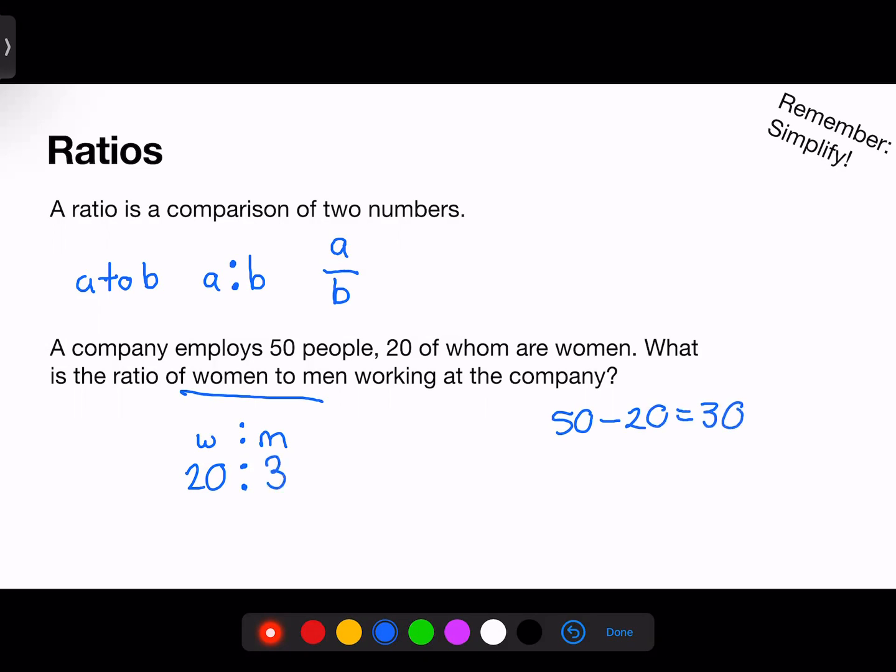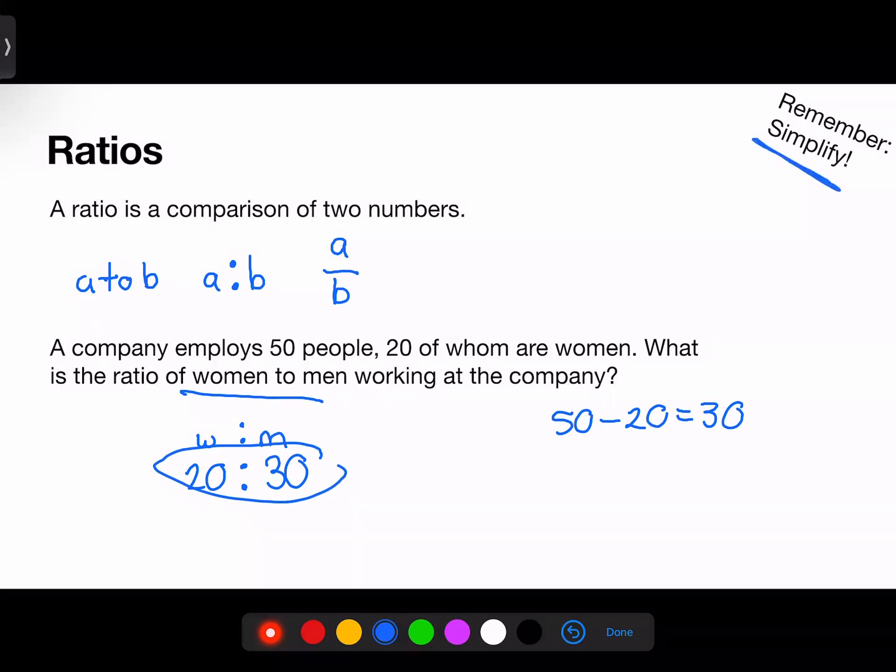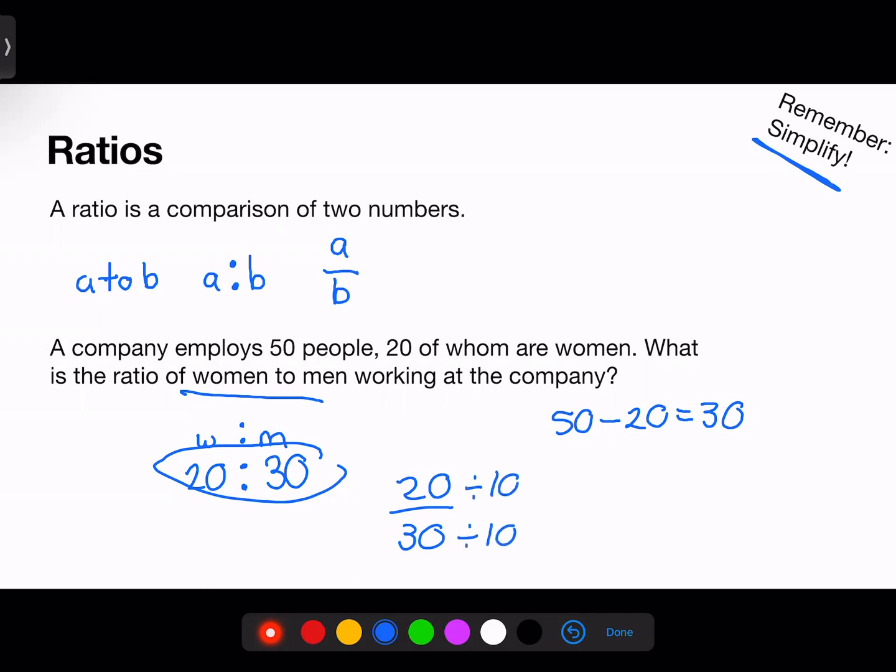The ratio is now 20 women to 30 men. However, this will not be an answer choice. When writing ratios, we have to simplify. It's the exact same process as simplifying a fraction: 20 over 30. The greatest common factor between 20 and 30 is 10. Divide both the top and the bottom by 10 to get the final answer of 2 over 3. This is the ratio of women to men.